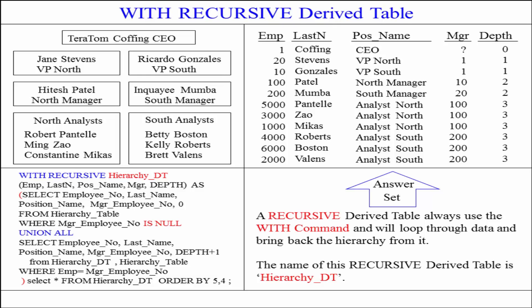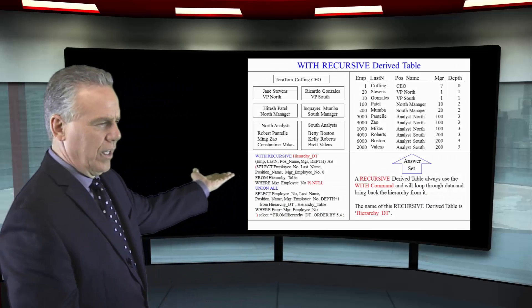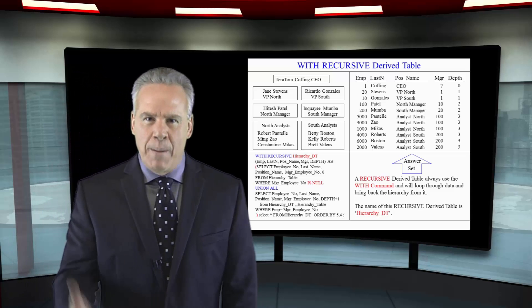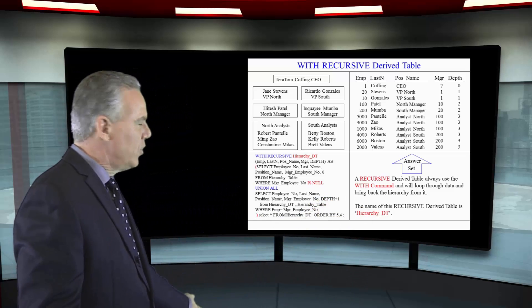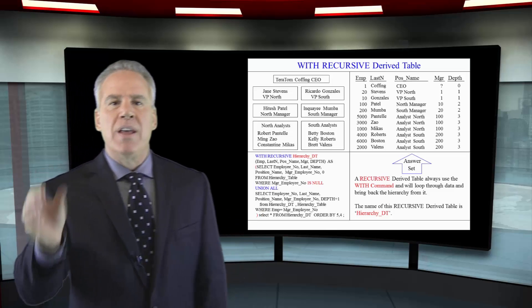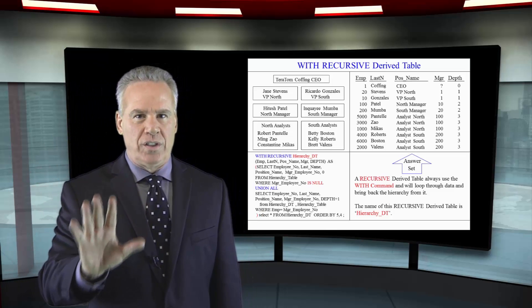Tara Tom, CEO, is at the top. Who reports to me? Jane Stevens and Ricardo Gonzalez — they're my VPs of the North and the South. Who reports to them in the hierarchy? Hatesh Patel and Gwawe Mumbay report to them, and then each of those have analysts that report to them. That's the hierarchy I want you to see.